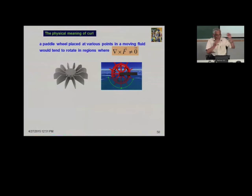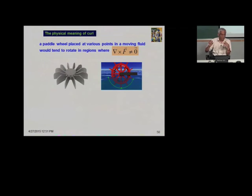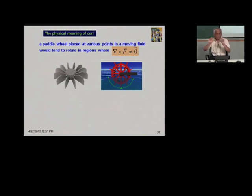Conservative forces are irrotational — their curl is zero. The connection between gradient, circulation, and curl: the curl of the vector field at a point represents the net circulation of the field around that point. The magnitude of curl represents the maximum circulation at any point. The direction is given by the right-hand rule and is normal to the surface on which the circulation is greatest.